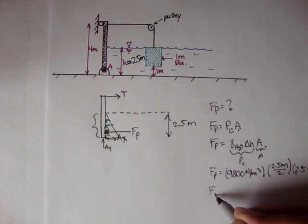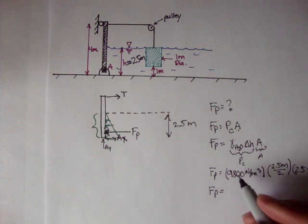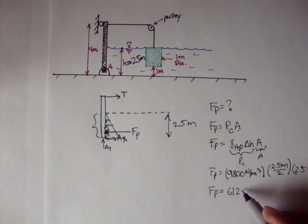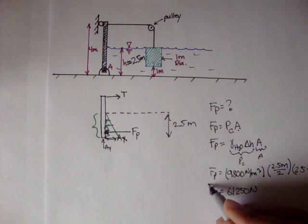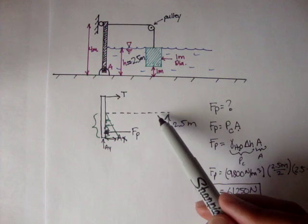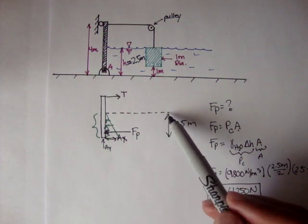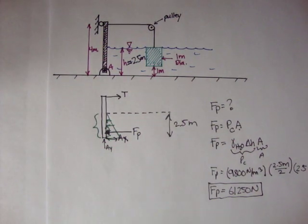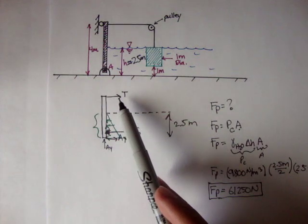And if we figure this out, we say Fp is equal to about 61,250. And so that's Fp. That's the force of the pressure distribution acting on the gate at a height of water is equal to 2.5 meters. Now, so we know Fp.